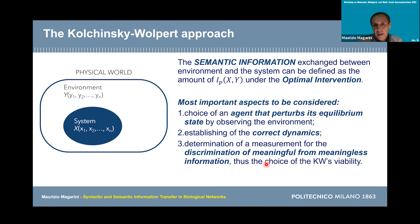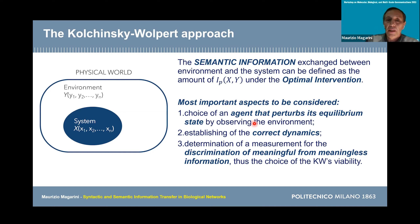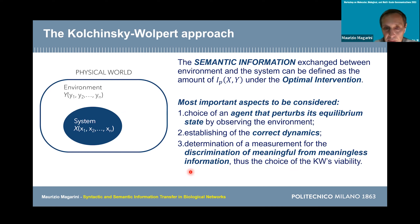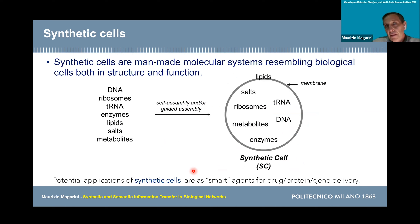The problem is characterizing this channel, because at this point the mutual information between the system and the environment defines a channel between the environment and the system. You perturb the equilibrium of the agent observing the environment and observe how it evolves. This allows you to discriminate between what is meaningful — the information the system obtains from the environment — and what is not relevant. How can we apply this to synthetic cells?